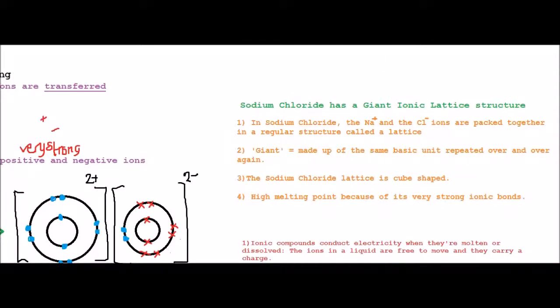So the one thing that is given in the revision guide as an example is sodium chloride, and it has a giant ionic lattice structure. So there are several points about this that we need to learn. In sodium chloride, the Na ion and the Cl ion, also the Na and Cl ions, are packed together in a regular structure called a lattice. Remember the word lattice. Good.